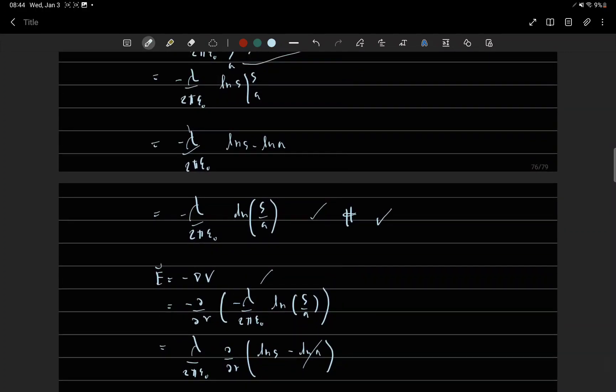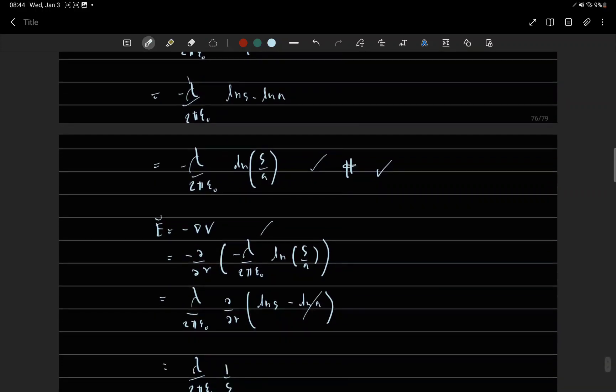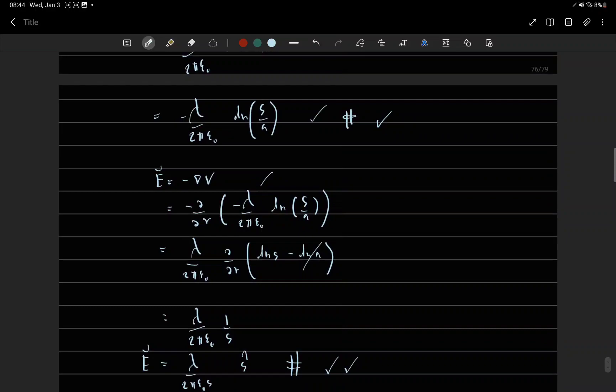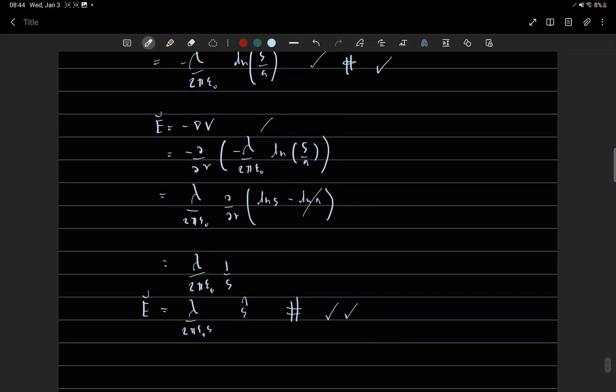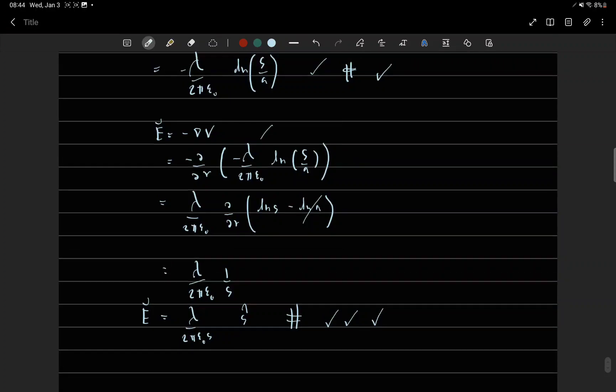We can use the relation electric field equals minus grad V and substitute grad V. So we can check that we have the same electric field as above.